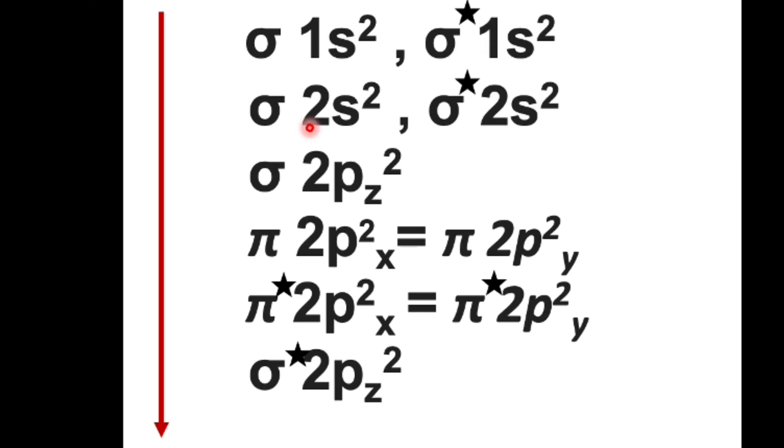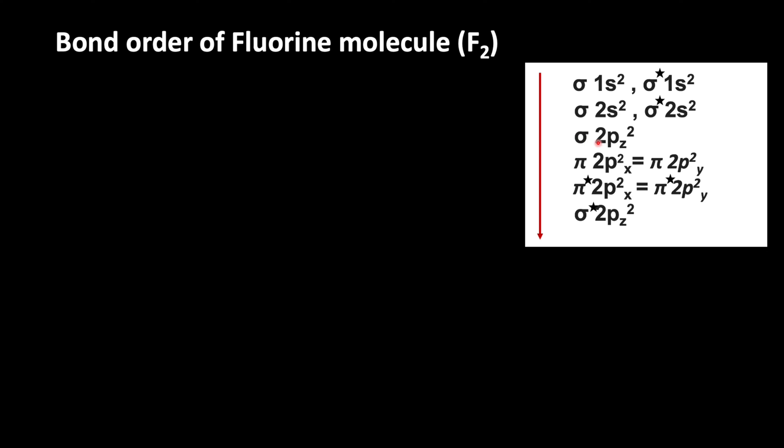Then the electrons enter into sigma 2s, sigma star 2s, then sigma 2pz. Based on this information, let us write the electronic configuration of fluorine molecule.